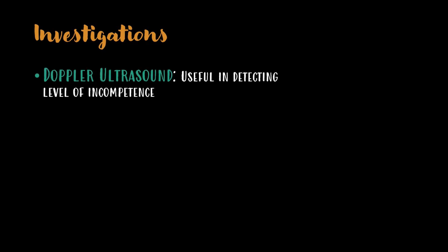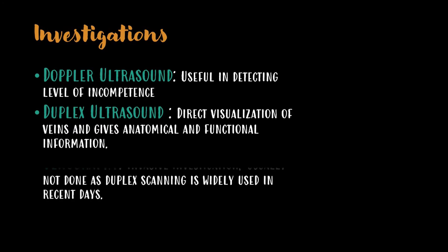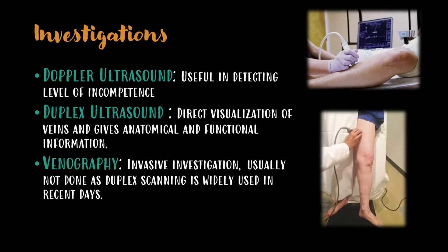The investigations done for varicose veins are almost similar to those for deep vein thrombosis. Doppler ultrasound is useful in detecting the level of incompetence. Duplex ultrasound is most widely used, giving direct visualization of veins and providing both anatomical and functional information. Venography is an invasive investigation and is usually not done since duplex scanning is widely available.